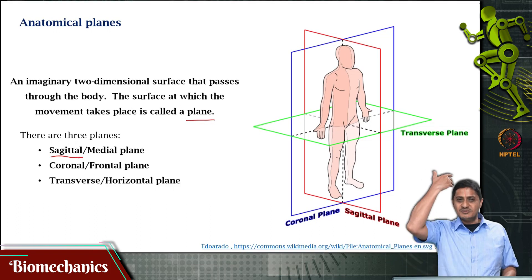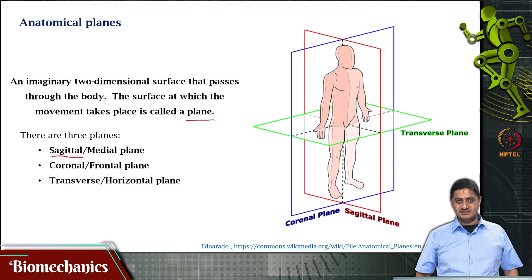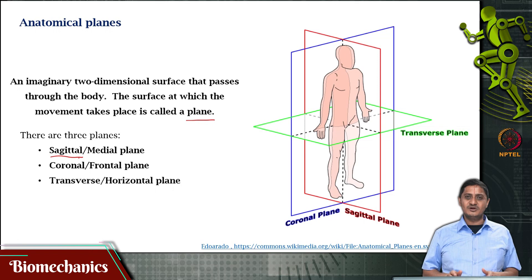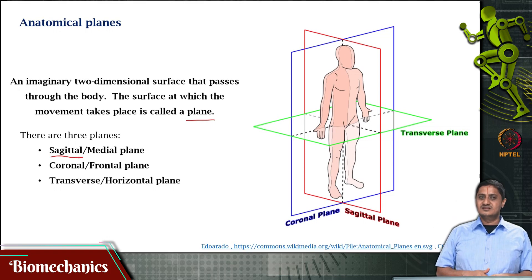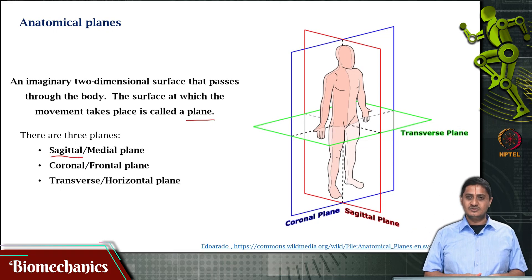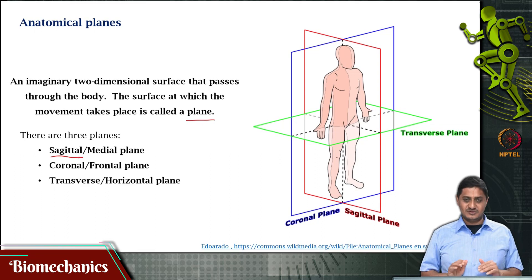Note that there can also be a sagittal plane that passes just through the shoulder but not through the head — that is a different sagittal plane. It just has to divide the body into two parts: a left part and a right part. So a sagittal plane divides the body into a left part and a right part, or the two sides of the body.